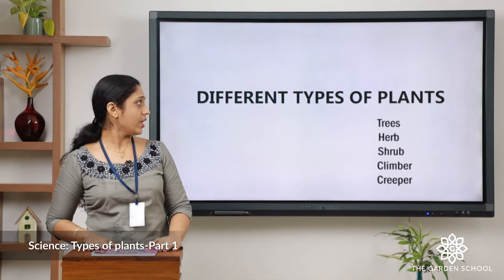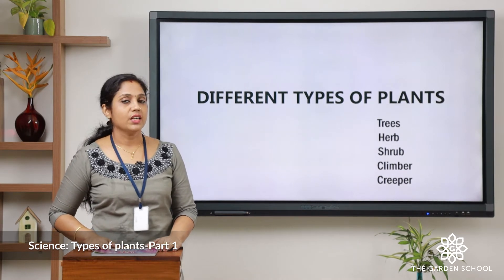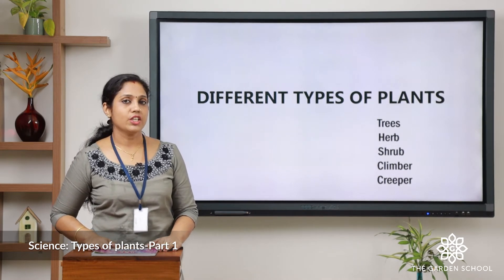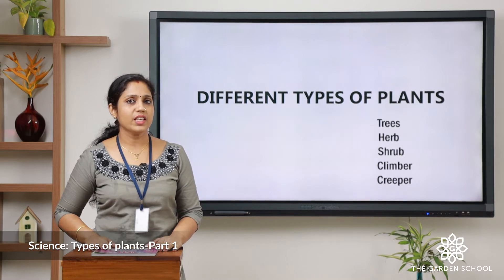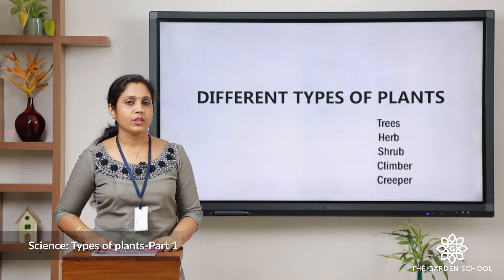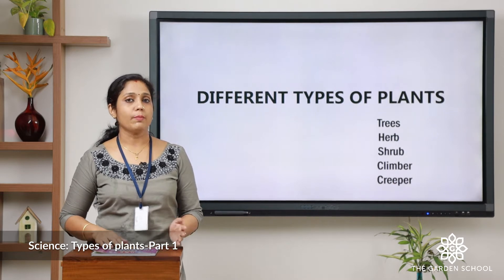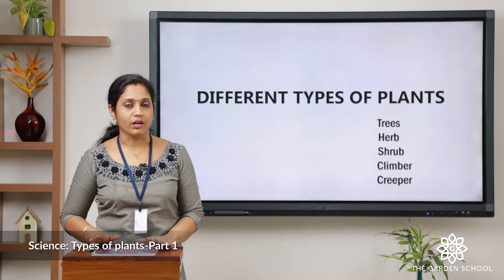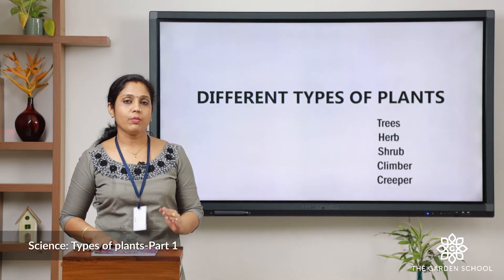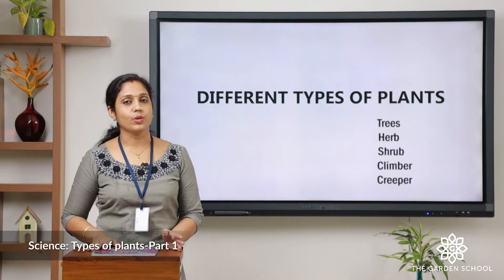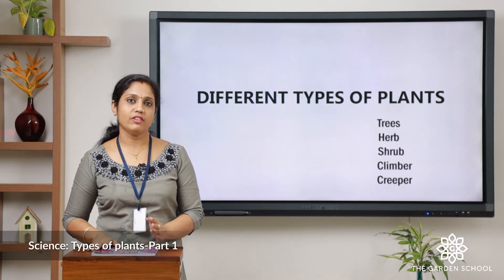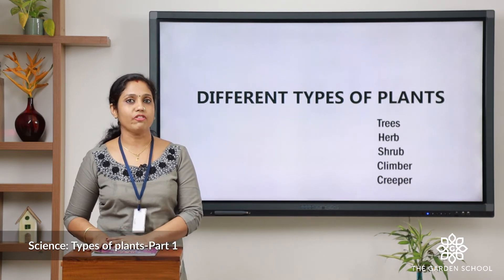You can see trees, herb, shrub, climber, and creeper — these are the different types of plants. Some plants are big, some are small, some climb onto other plants, and some grow along the ground.